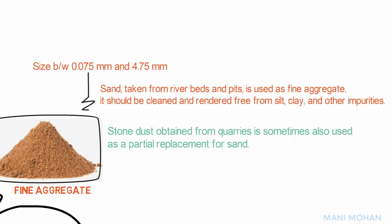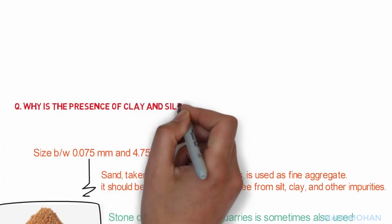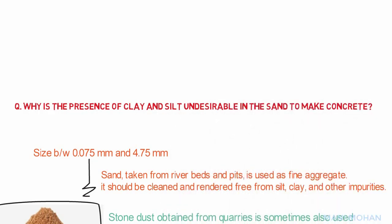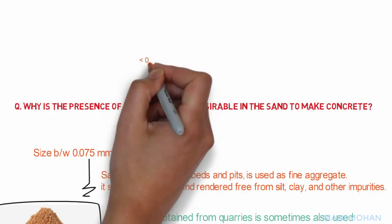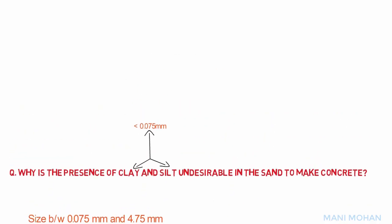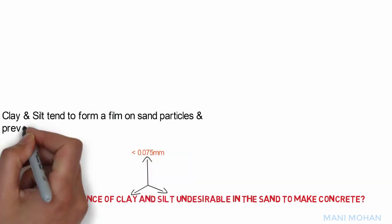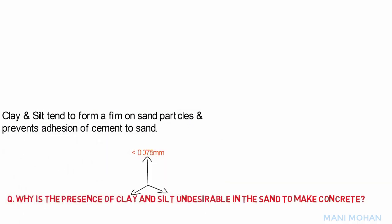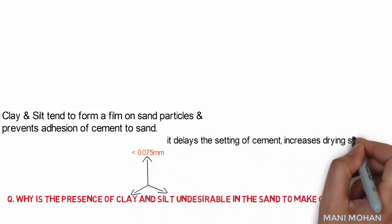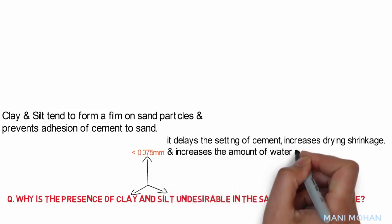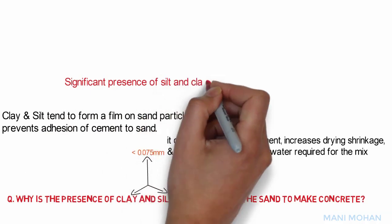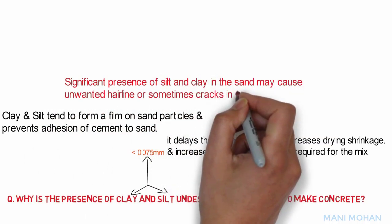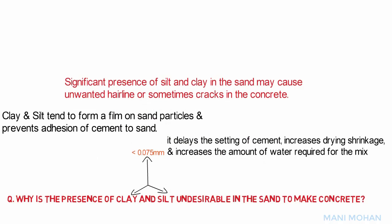Why is the presence of clay and silt undesirable in sand used to make concrete? Silt and clay materials are fine aggregate particles smaller than the 75 micron sieve size. They tend to form a film on sand particles and prevent adhesion of cement to sand. Furthermore, they delay the setting of cement, increase drying shrinkage, and increase the amount of water required for the mix, thus reducing the ultimate strength of the concrete or mortar. A significant presence of silt and clay may also cause unwanted hairline or sometimes significant cracks in the concrete.